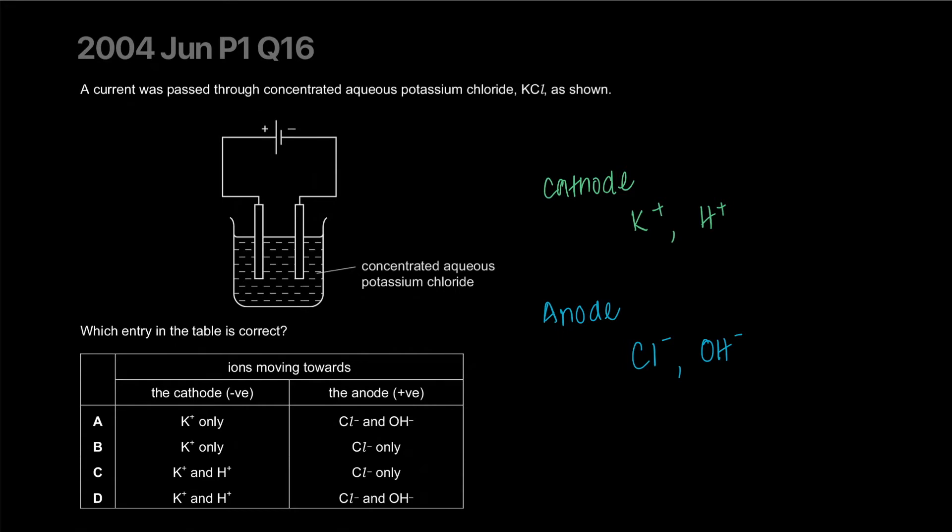Looking at the cations, we'll easily figure out that hydrogen is lower in the series so it'll easily discharge. They're talking about what's going to move towards the cathode. Both of them will because it has a negative charge, it's going to attract both of them. Both of these will move towards the anode. The answer is D, potassium and hydrogen, chlorine and hydroxide.